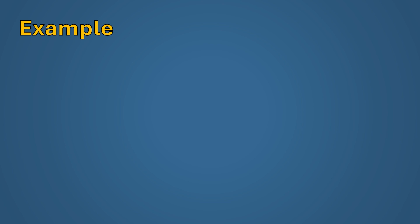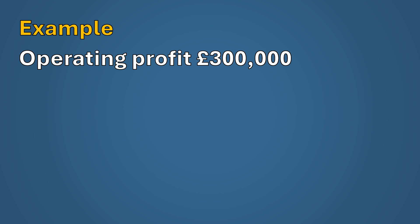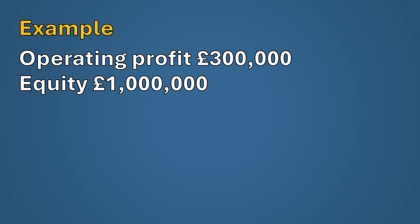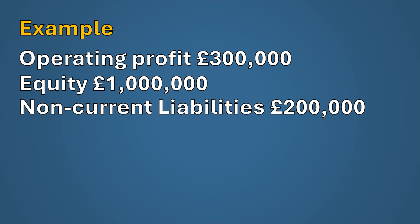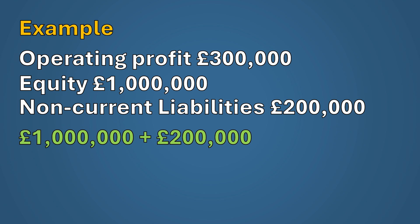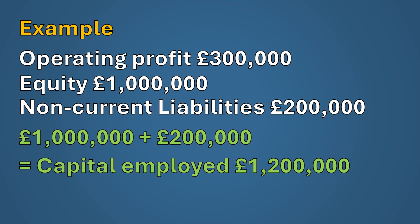Let's now have a look at a quick example. Company A has the following finances: an operating profit of £300,000, equity of £1 million, and non-current liabilities of £200,000. So capital employed equals £1 million plus £200,000, therefore £1.2 million.